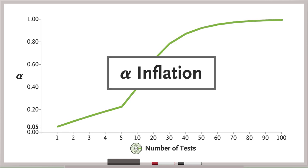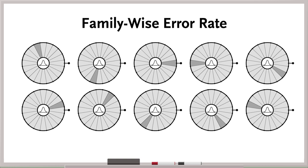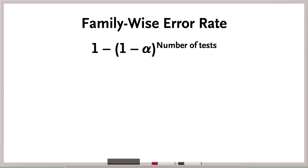Not convinced yet? Here's where a bit of math can be helpful. The family-wise error rate is the probability of obtaining at least one false positive in a family of hypothesis tests, and can be calculated using a simple formula.